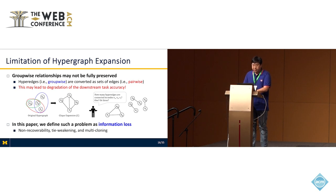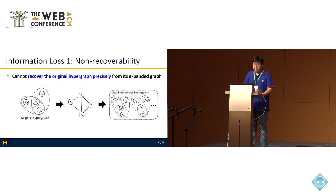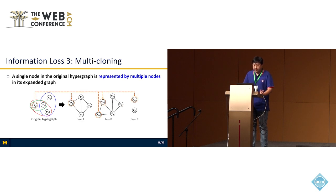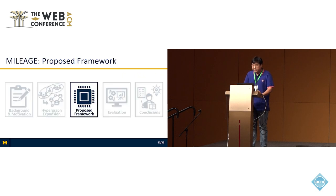Information loss is categorized into three problems. The first is non-recordability, where one cannot recover the original hypergraph precisely from its expanded graph. The second is tie weakening, where the tie strength between nodes belonging to the same hyperedge becomes weaker than in the original graph. The third is multi-cloning, where a single node in an original hypergraph is represented by multiple nodes in its expanded graph. Clique expansion suffers from non-recordability, star expansion suffers from tie weakening, and line expansion suffers from multi-cloning.